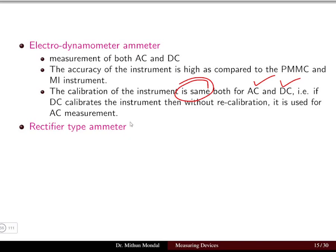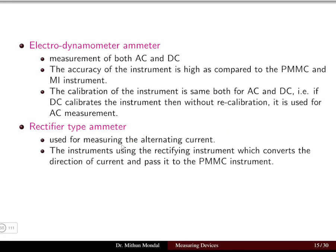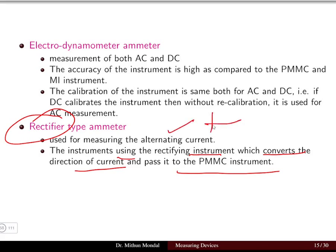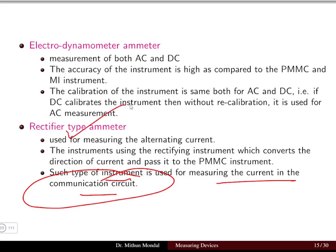Rectifier-type ammeters are used for measuring alternating current only. The instrument contains a rectifier which converts the direction of the current and passes it to a PMMC instrument. Since a rectifier converts AC into DC, the alternating current is first converted to DC and then measured using the PMMC instrument. This type is used for measuring current in communication circuits where the current range is relatively small.